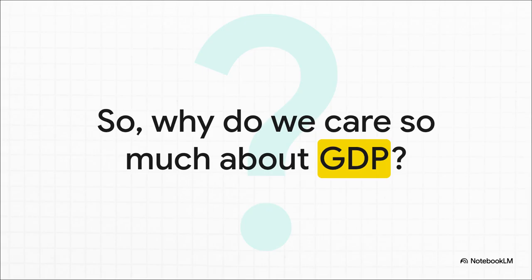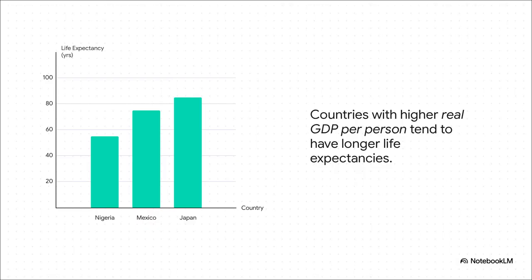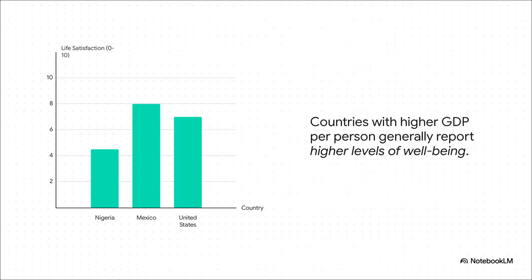So if GDP has all these flaws and misses so much of what we care about, why do we still pay so much attention to it? Why is it still the number one economic statistic that world leaders and investors watch so closely? The answer is actually pretty simple: even though a high GDP isn't the goal of life, it's a really good tool for achieving a better life. Countries with a higher GDP per person tend to have people who live longer — a richer country can afford better healthcare, cleaner water, and healthier food. And people in countries with higher GDP report being more satisfied with their lives. GDP is not a perfect measure of well-being, but it is a measure of our ability to obtain many of the inputs for a worthwhile life. It may not measure everything that matters, but it does measure something that matters a whole lot.